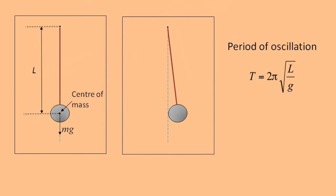For the simple pendulum, we can show that the period can be calculated from the equation T equals 2π√(l/g). So as the length increases, the period increases.